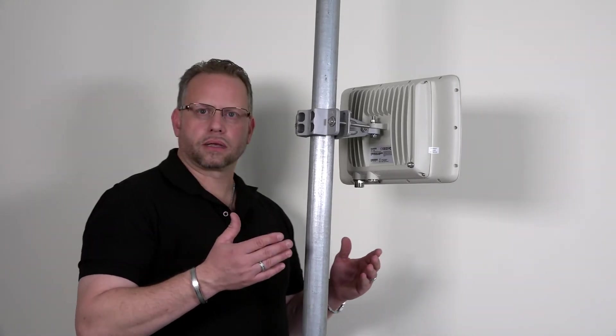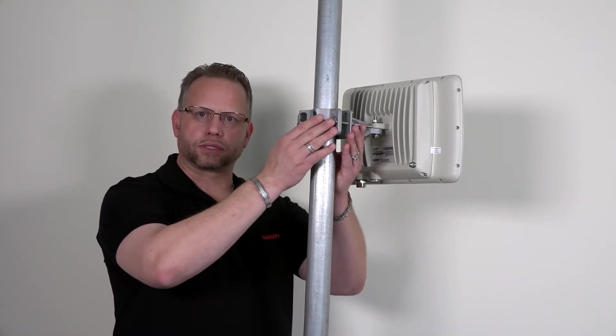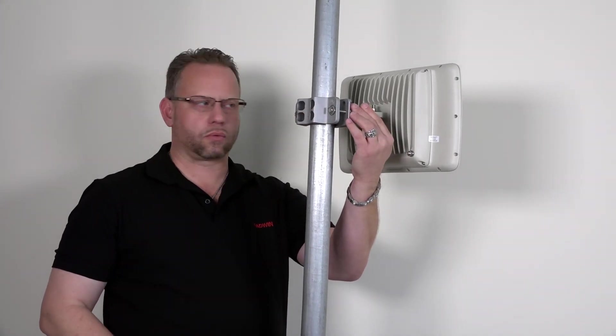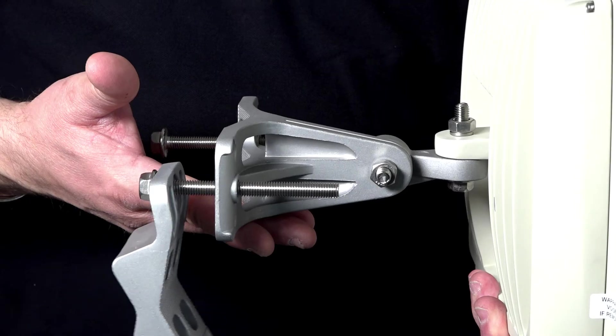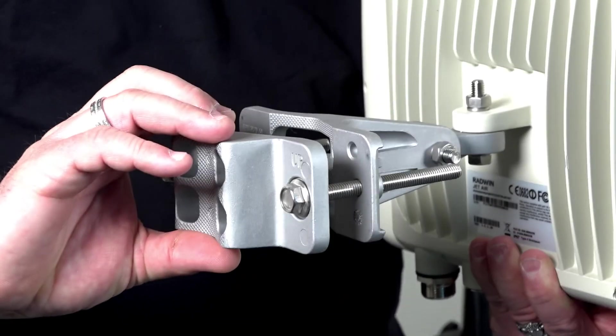The Radwin Jet assembly all put together includes the mounting bracket as you see here in cast aluminum and stainless steel hardware. The bracket is configured so that you can accommodate up to a 3 inch diameter pipe.